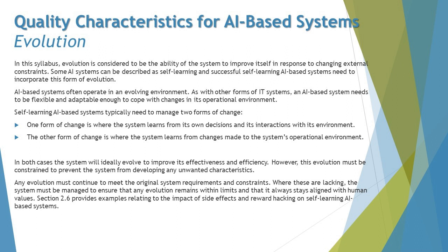In order to talk about evolution — as the word suggests — evolution is all about a product evolving over a period of time. The evolution of AI-based systems is slightly different from other web or mobile-based applications. From an AI perspective, evolution is considered to be the ability of the system to improve itself in response to changing external constraints. Some AI systems can be described as self-learning, and successful self-learning AI-based systems need to incorporate this form of evolution.